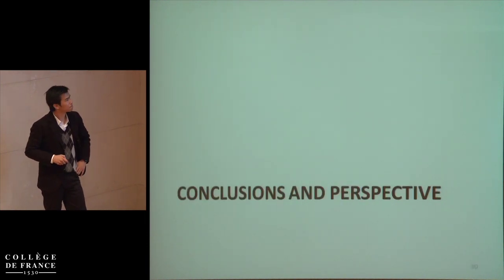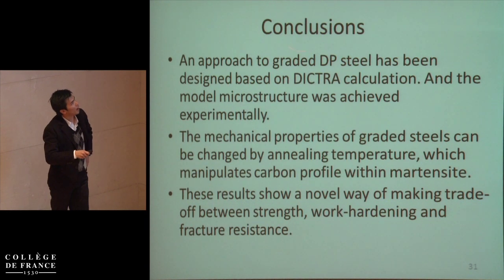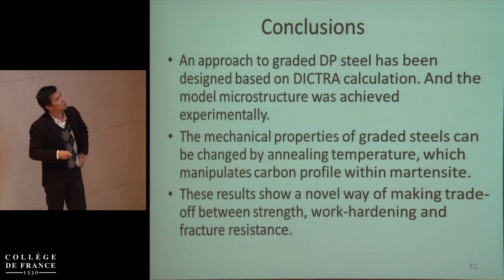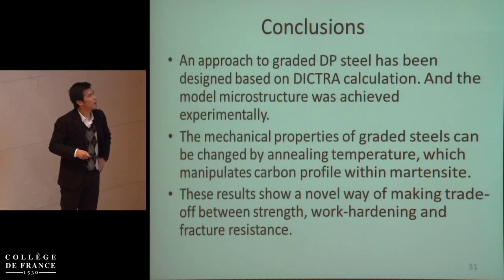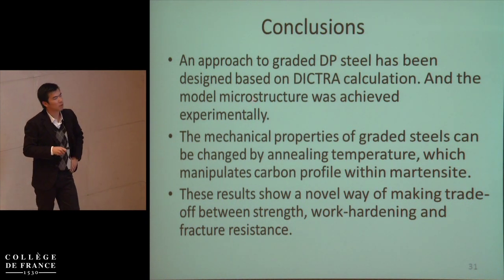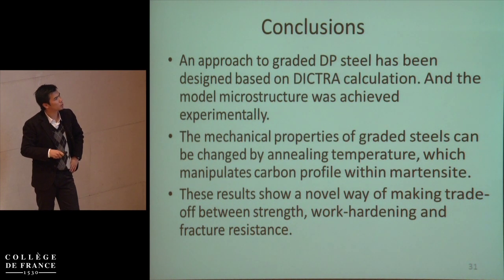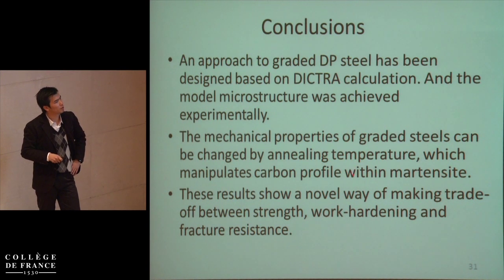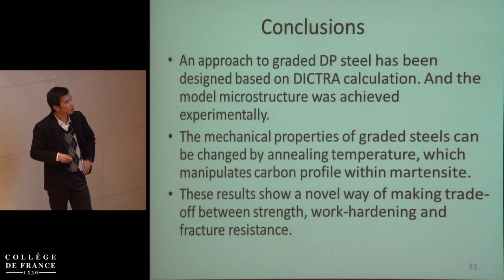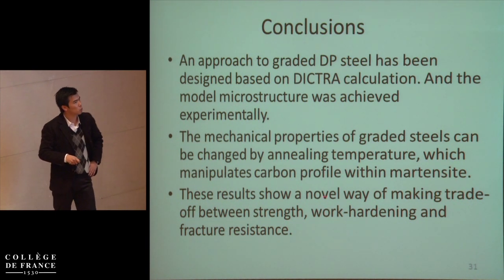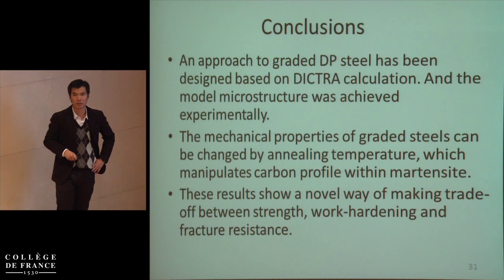Conclusions: an approach to graded DP steel has been designed based on DICTRA calculation and the model microstructure was achieved experimentally. The mechanical properties of the graded steels have been changed by annealing temperature, which manipulates the carbon profile within the martensite. This result shows a novel way of making trade-off between strength, work hardening, and fracture resistance.